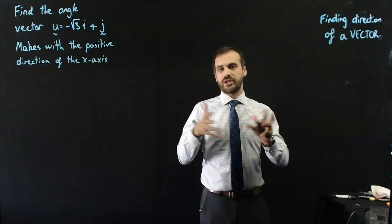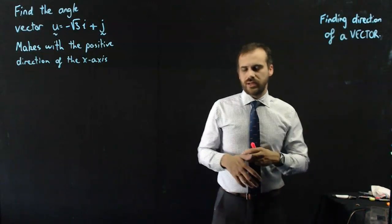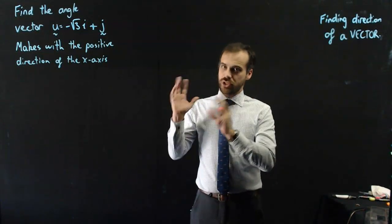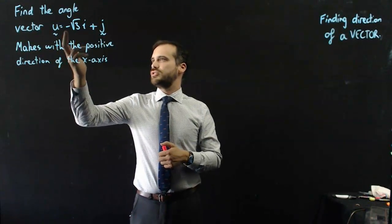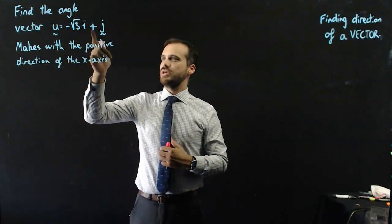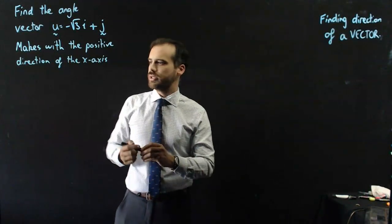So in this one we're finding the direction of a vector. We're thinking in terms of angles. Alright, so let's just jump straight into it. We've got a vector here. Vector u equals negative root 3i plus j. I've chosen those numbers for a specific reason. You'll see why.